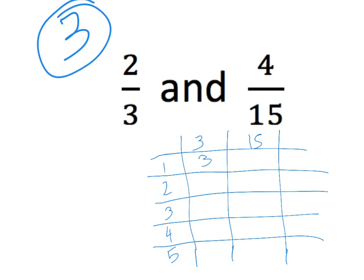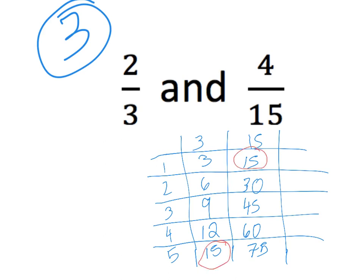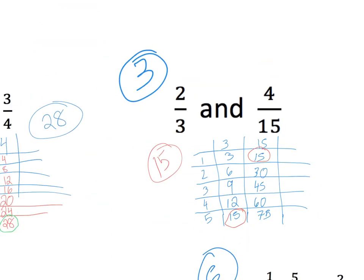One times three is three, six, nine, twelve, and fifteen. Fifteen, thirty, forty-five, sixty, seventy-five. I can see that we got fifteen in each column, so fifteen is the least common denominator there.